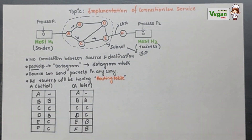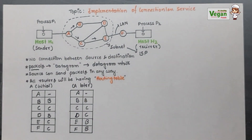So, representing the routing table for A is enough for the exam. Hope you understood the concept of the implementation of connectionless services. If you have any doubt, please comment below. Thank you.